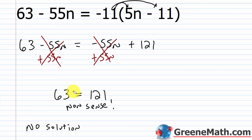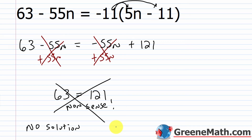If your variable disappears and one side doesn't equal the other, you have a contradiction — there's no solution.